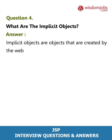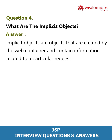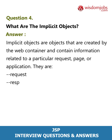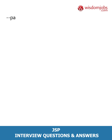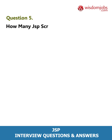Question 4: What are the implicit objects? Answer: Implicit objects are objects that are created by the web container and contain information related to a particular request, page, or application. They are: request, response, pageContext, session, application, out, config, page, and exception.